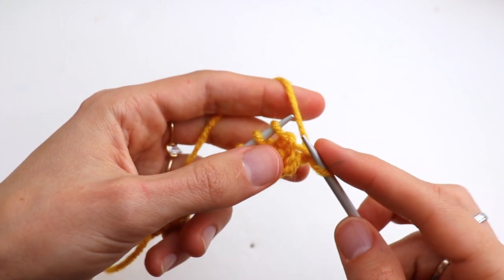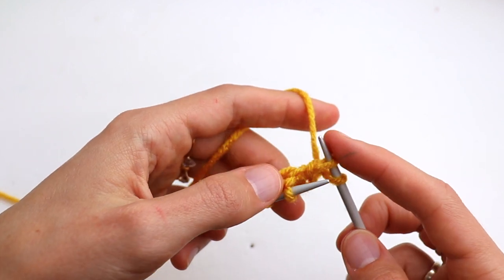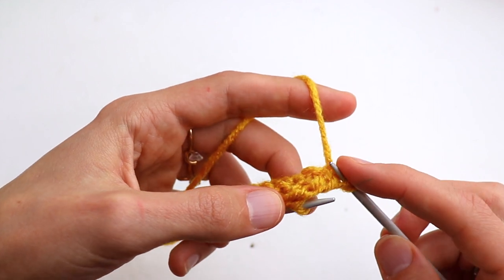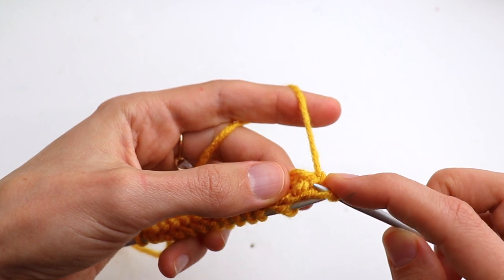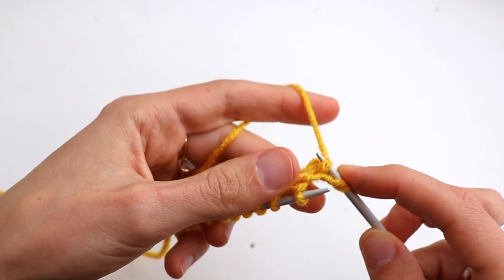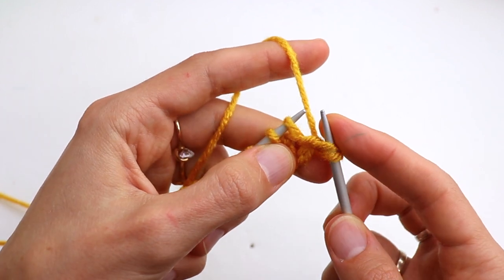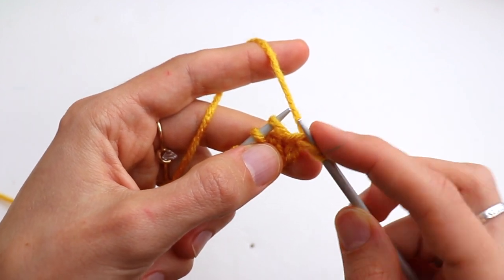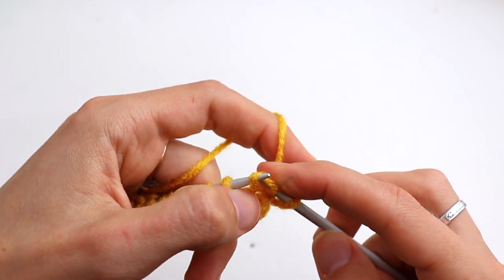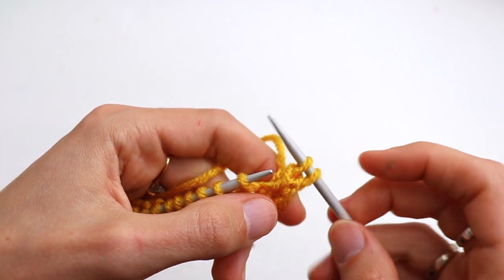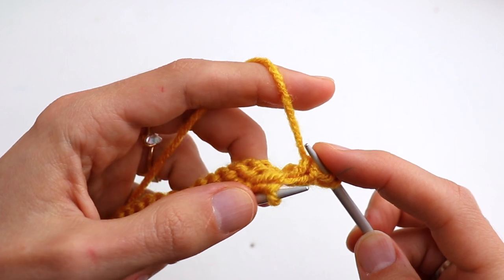Slip the first stitch. Now slip next stitch knitwise. Find the second ridge: here is the first one, here is the second ridge, and place it on the left hand needle in this way. Now knit it as normal knit stitch and pass slip stitch over this knitted stitch. And that's what we got.